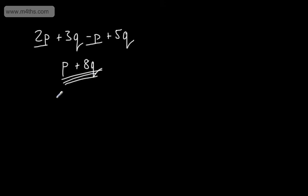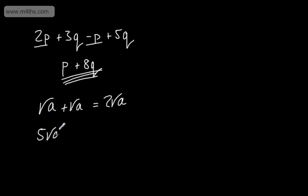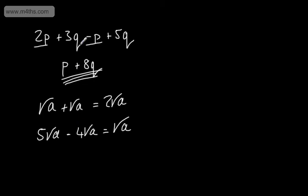Let's look at some basic rules. If we have the root of a plus the root of a, this is going to give us 2 root a. If I had 5 lots of the root of a and subtracted 4 lots of the root of a, this would give me 1 lot of the root of a. So all we're doing is adding and subtracting like we would with algebraic expressions.